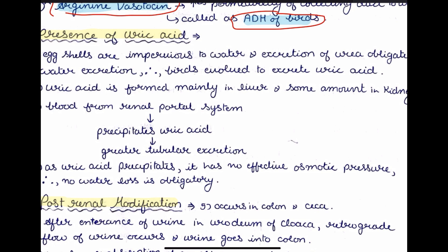In birds, the main excretory product is not urea but uric acid. Eggshells are impervious to water and excretion of urea obligates water excretion; therefore birds have evolved to excrete uric acid instead, as it saves water. Uric acid is formed mainly in the liver and some amount in the kidney — a very important point. Blood from the renal portal system causes the precipitation of uric acid, leading to greater tubular excretion. As uric acid precipitates, it has no effective osmotic pressure, so water loss is not obligatory.